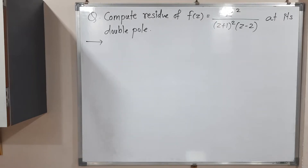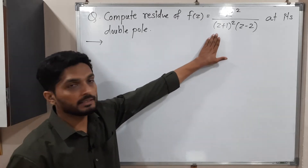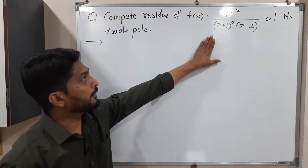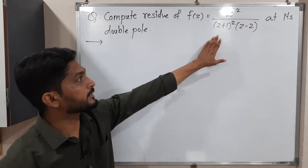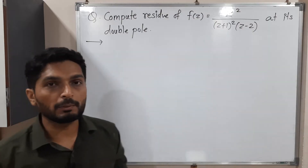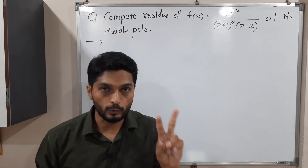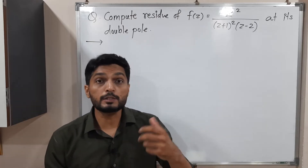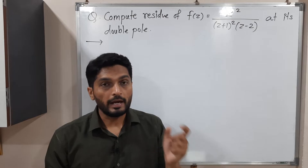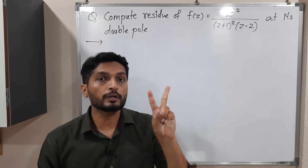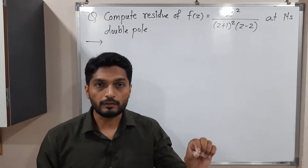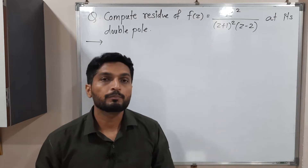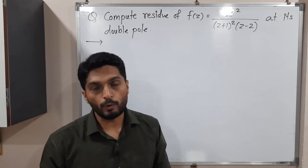Hi everyone. In this video we are going to discuss this example. So what they have given — they have given this function. We have to find the residue at its double pole. Double pole means pole of order 2. First of all we have to find its poles and their orders. If we get any pole of order 2, then for that point we have to find the residue. So let us start to solve this problem.